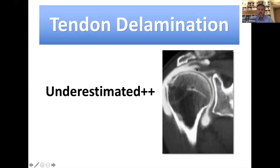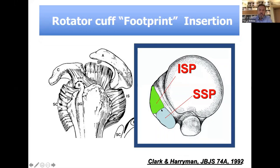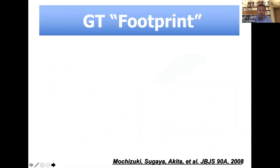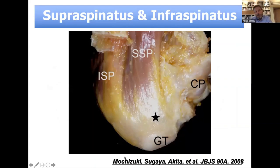We should consider tendon delamination from a histological standpoint. From the old work of Clark and Ahriman, you can see there is a mix between the capsule and the tendon of the rotator cuff at the insertion — both the tendon and the capsule insert on the footprint. Importantly, the insertion of the supraspinatus is very small compared to the infraspinatus. This is confirmed by the anatomical work of the Japanese surgeons — Mochizuki, Sugaya, and others.